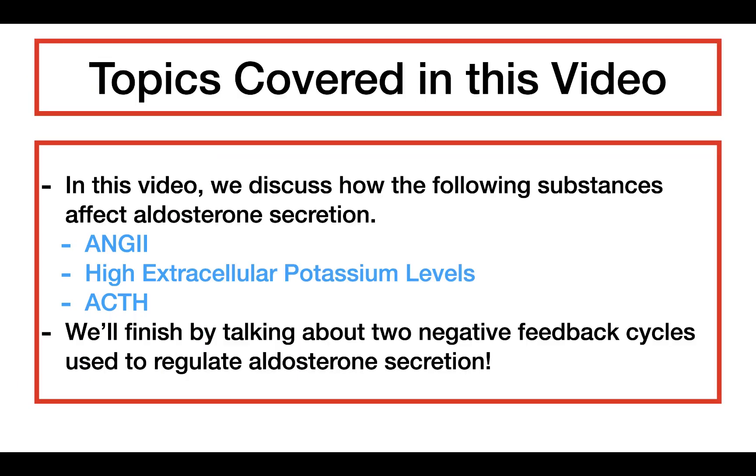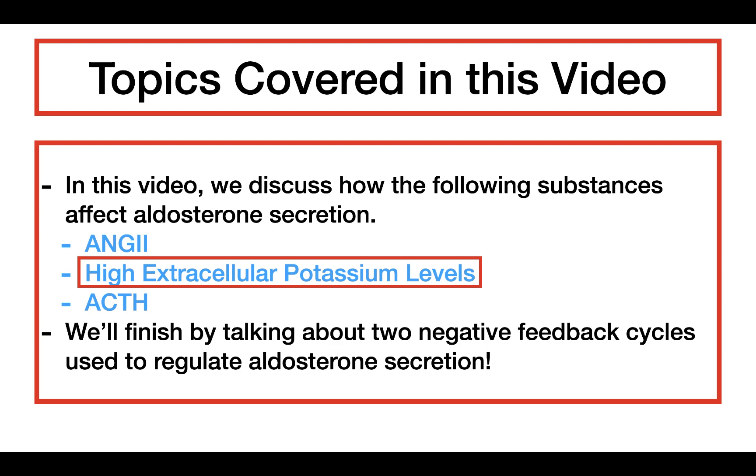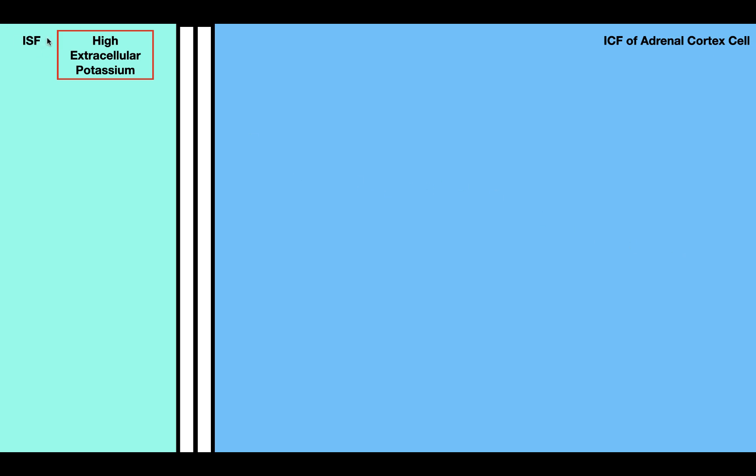Now, how does high extracellular potassium affect aldosterone secretion? Looking at our diagram of the adrenal cortex cell, we can see high extracellular potassium in the interstitial fluid. Inside the plasma membrane we have potassium leak channels, which allow potassium to flow down its electrochemical gradient — from the cytosol into the interstitial fluid. Because potassium carries a positive charge, when it leaves the cell, positive charge leaves as well, keeping the cell at a negative resting potential.